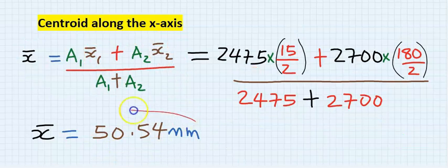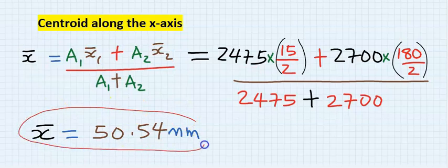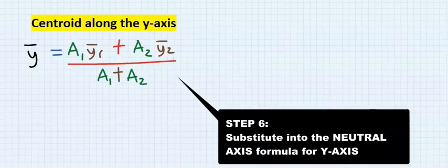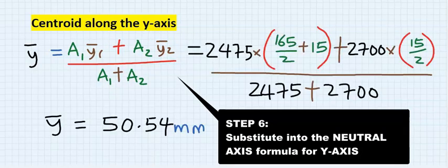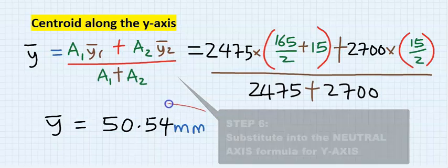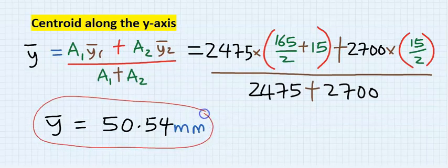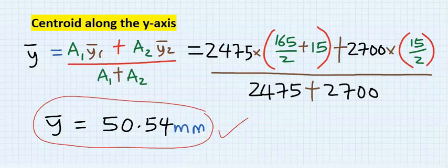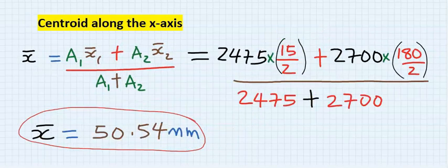Having obtained the centroid for the X axis, next is let's find the centroid for the Y axis. And for the Y axis, if you substitute and solve carefully, you'll see that the centroid along the Y axis is 50.54 millimeters. In this calculation, you can see that the centroid along the Y axis and the centroid along the X axis are the same.